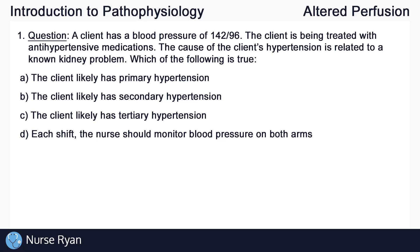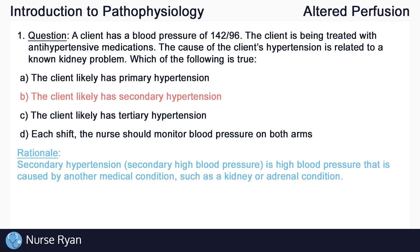Starting off with question number one. A client has a blood pressure of 142 over 96 and is being treated with anti-hypertensive medications. The cause of the client's hypertension is related to a known kidney problem. The answer is B — the client likely has secondary hypertension. Secondary hypertension is high blood pressure caused by another medical condition such as a known kidney or adrenal condition.